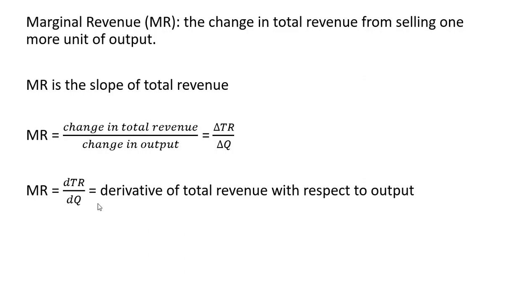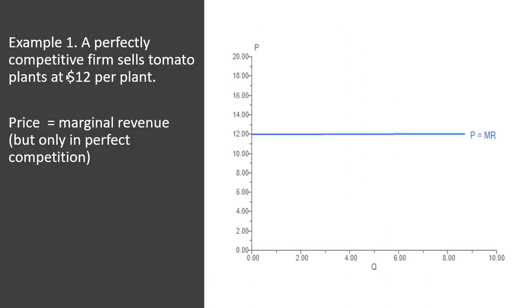Let's do some examples. We have a perfectly competitive firm that sells tomato plants at $12 per plant. We want to graph this firm's marginal revenue. Well, for perfect competition, this is pretty straightforward. Price will equal marginal revenue in perfect competition.